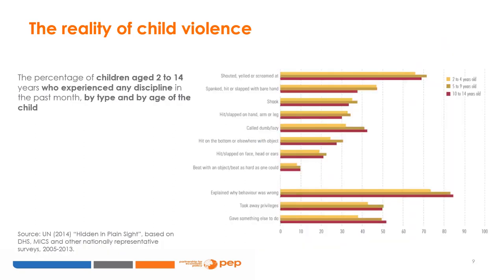This graph shows the percentage of children aged 2 to 14 years who experienced any discipline in the past month by type and age of the child. The most prevalent form of discipline is explaining to the child what they did wrong. However, it is closely followed by shouting, yelling, or screaming. At the same time, other forms of violence are fairly common, such as hitting, insulting, or shaking of the child.